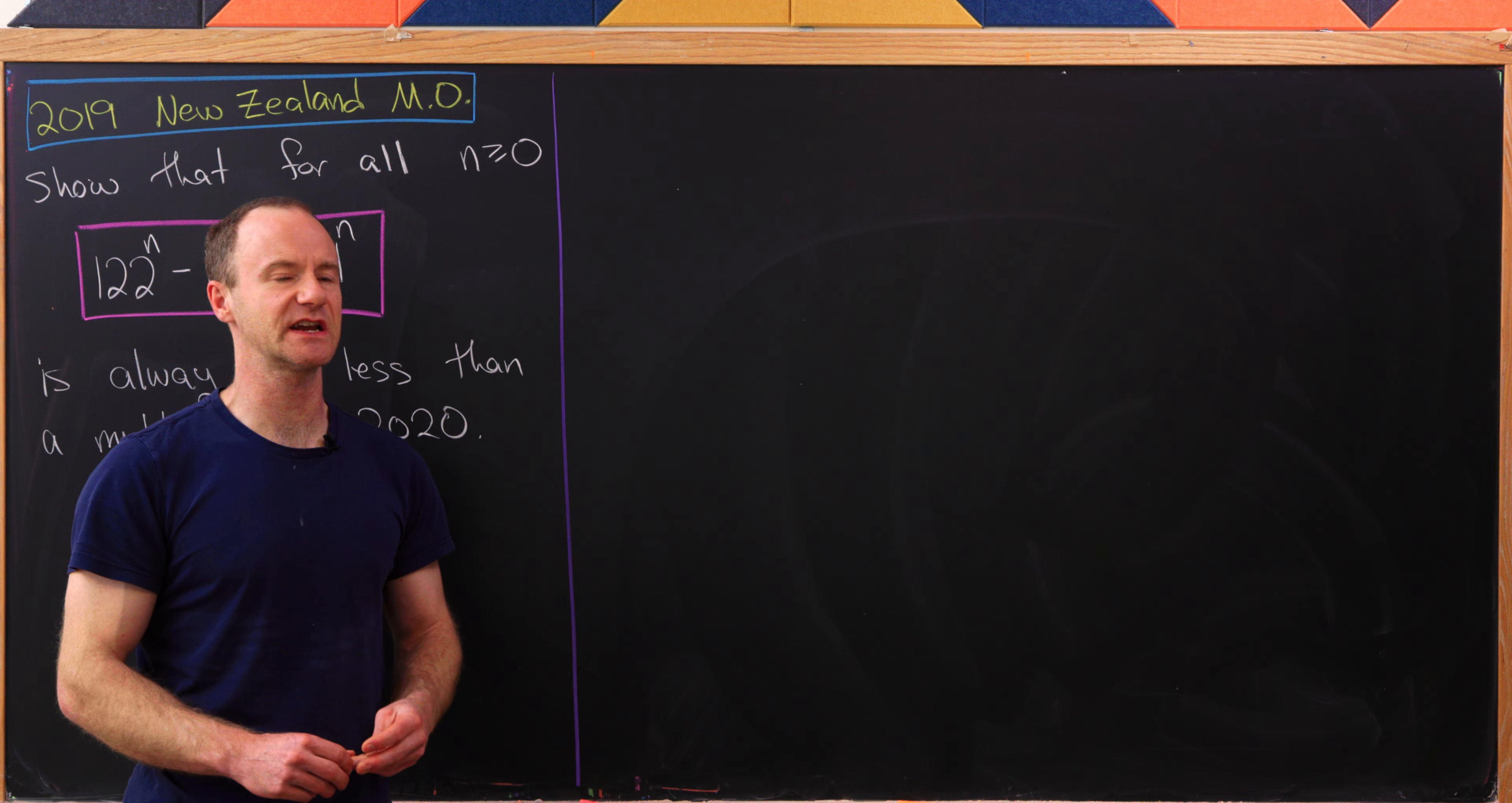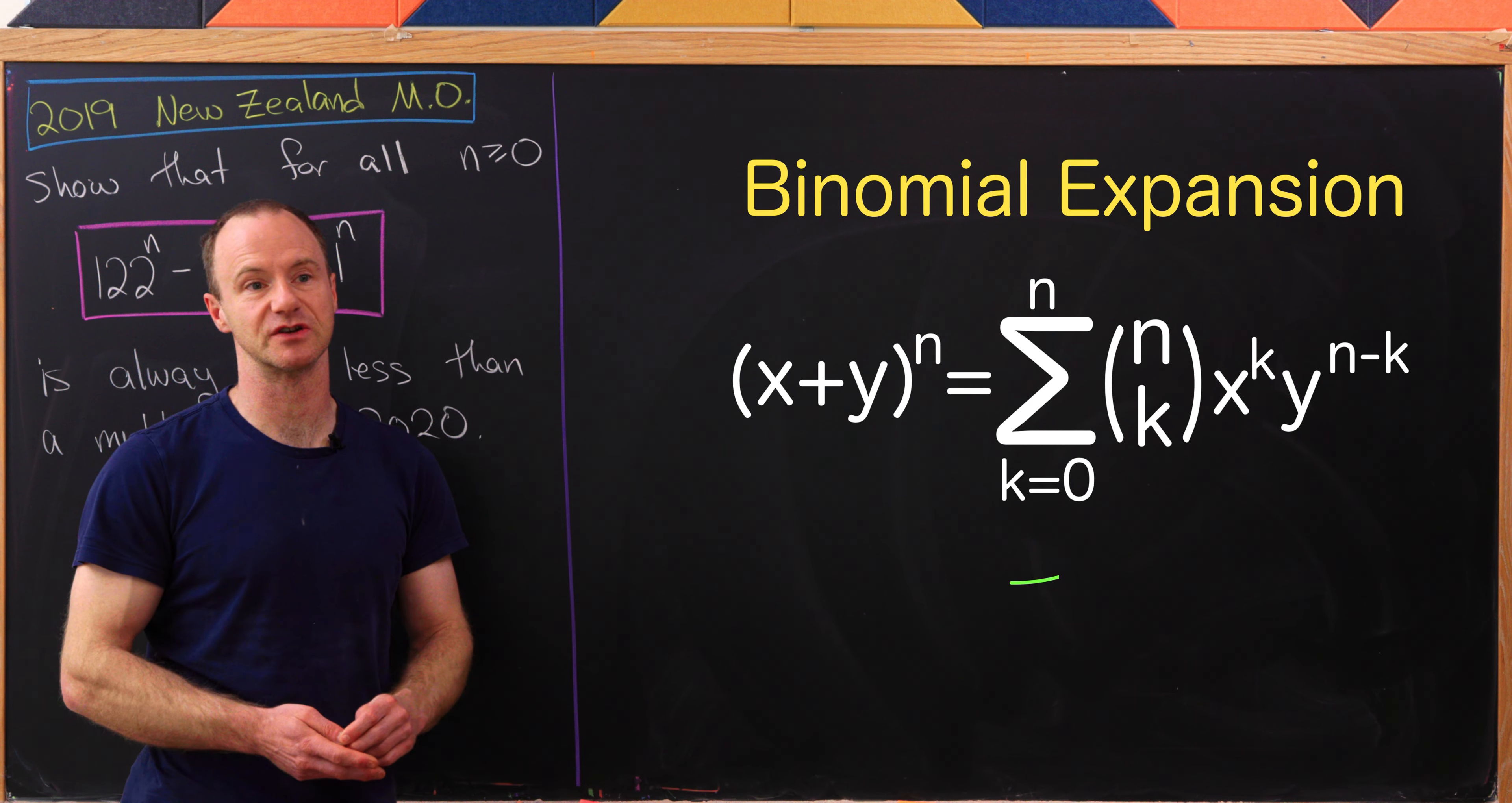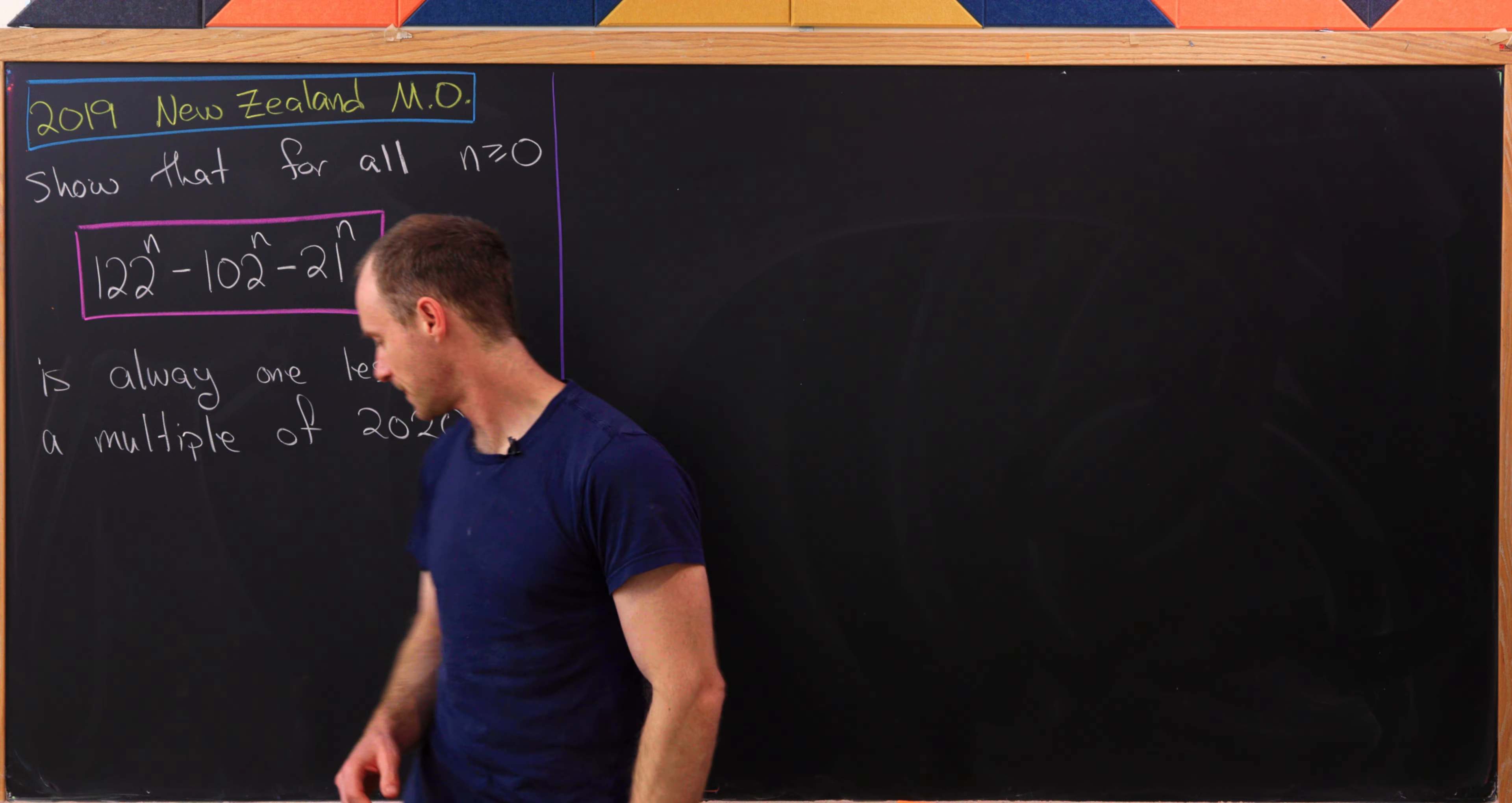And that second example is particularly important because it's often nice to work with negative congruences. So another thing that we'll use towards the end is a binomial expansion formula. We can expand the binomial (x + y)^n using a sum of binomial coefficients in different powers of x and y. We'll see that at the end.